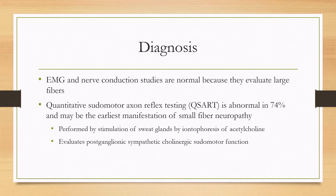So how do you diagnose it? QSART — Quantitative Sudomotor Axon Reflex Testing — is helpful and can be abnormal in about three quarters of patients, making it one of the earliest manifestations of small fiber neuropathy. It is performed by stimulation of sweat glands via iontophoresis of acetylcholine into the skin, which stimulates sweating, and it evaluates postganglionic sympathetic cholinergic sudomotor function.